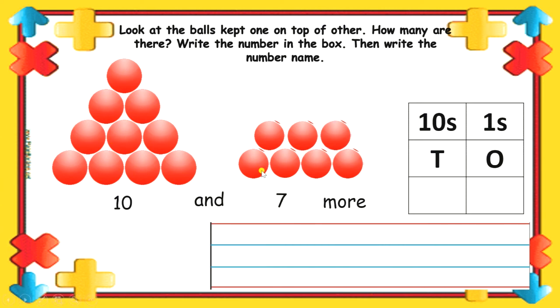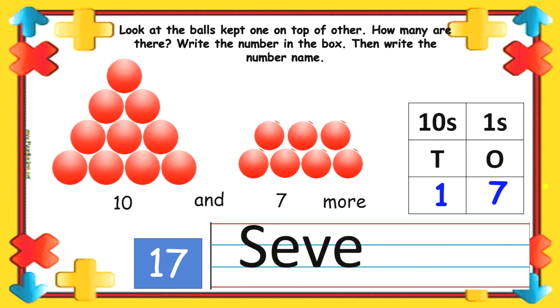Next 10 balls and 7 more. It becomes 17. In which, we write 7 in 1's place and 1 in 10's place. Spelling is S-E-V-E-N-T-E-E-N.